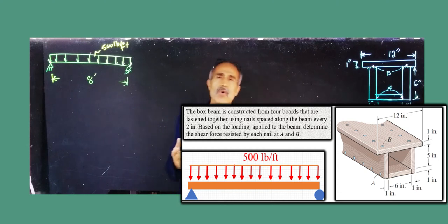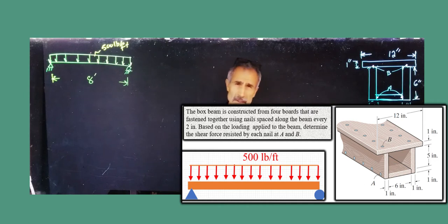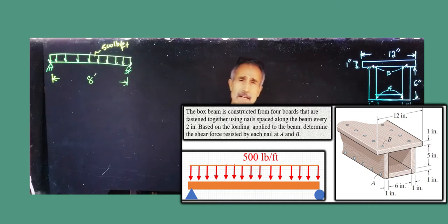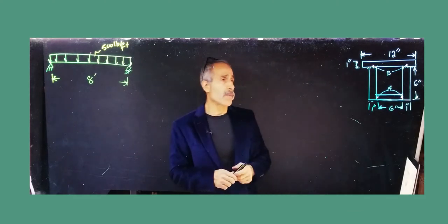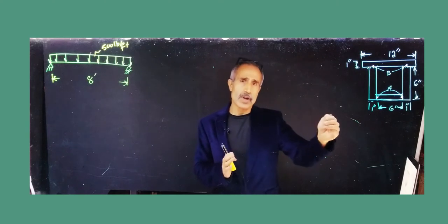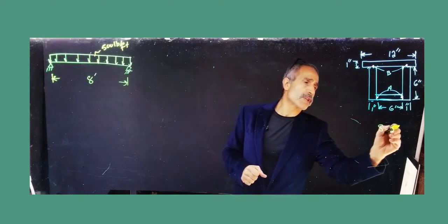We can approach this problem either way: given the loading and spacing, find the force on a nail, or given the shear force on a nail, find the spacing to use. For now, let's go the other way and say the nails are spaced at two inches — so s for the nail is about every two inches.